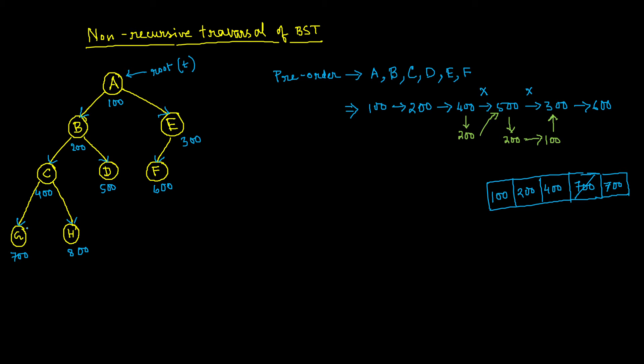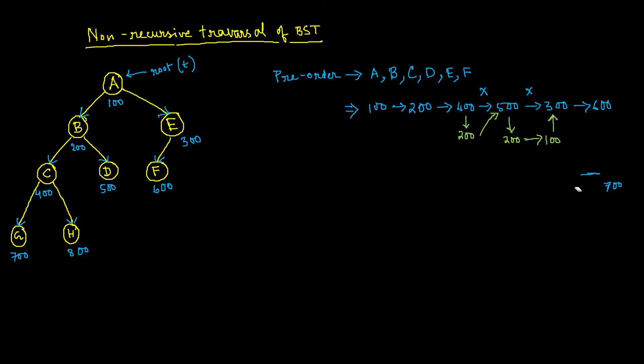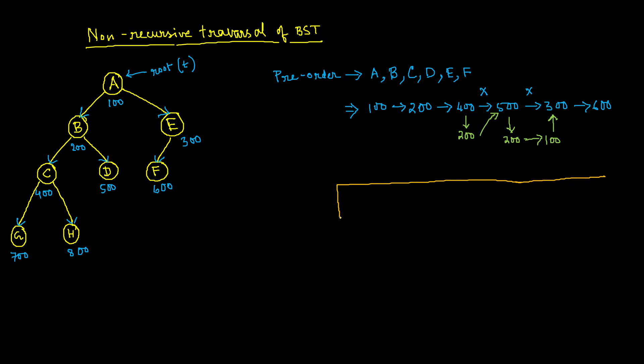After jumping, if we find we're standing on a null location, we realize we've crossed the last level of the tree and should not continue — we go back. Let's draw this out again with a set of memory locations representing our address pool.